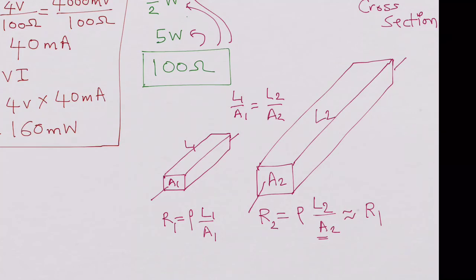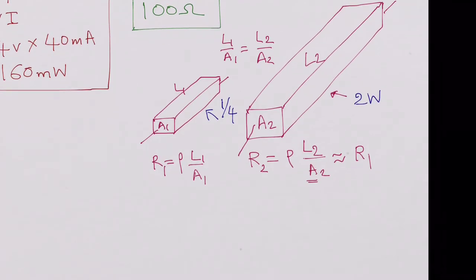If you look at these two resistors, R2 would have a larger power rating — say 2 watts — while R1 might be only one-fourth watt. If you have more material in the resistor it can dissipate more heat, so you get a larger power rating. Resistors with a larger power rating will also be larger in physical size.